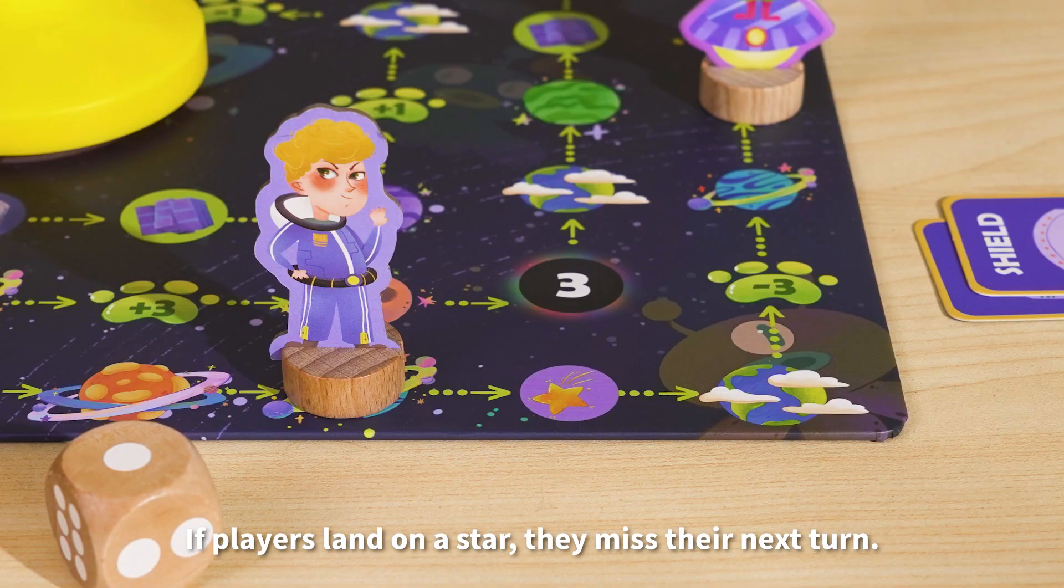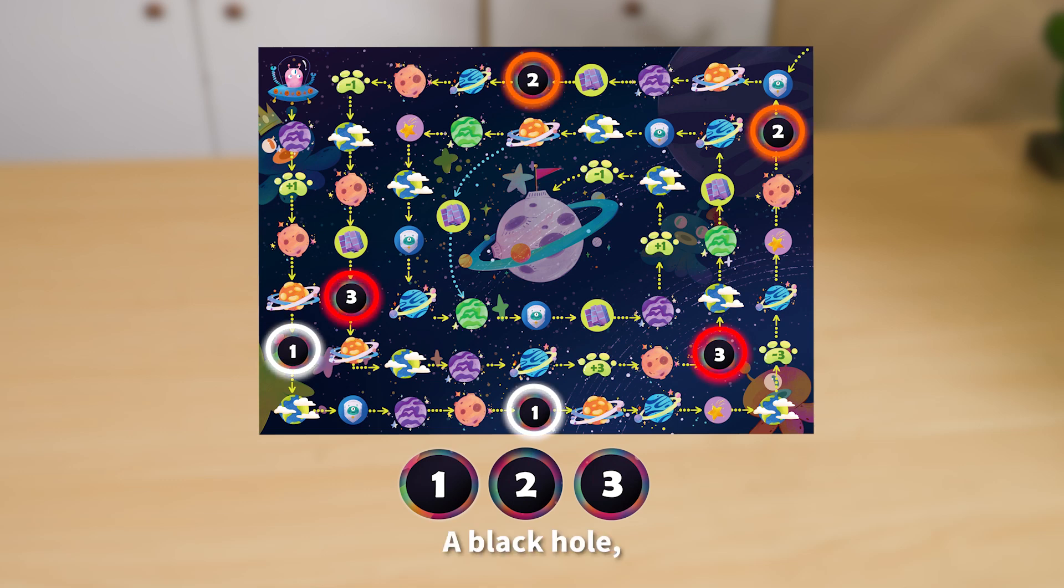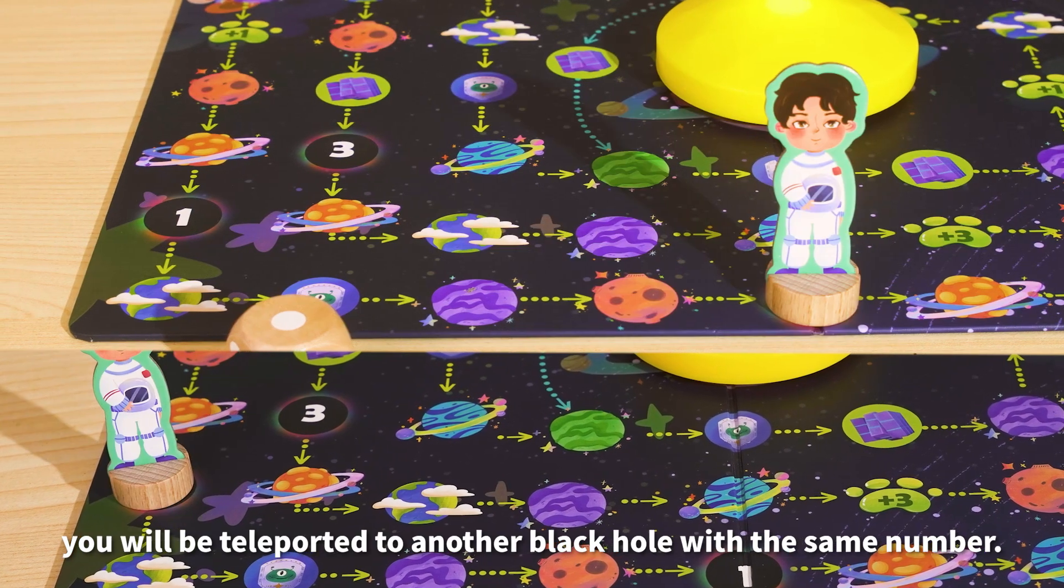If players land on a star, they miss their next turn. A black hole. You will be teleported to another black hole with the same number.